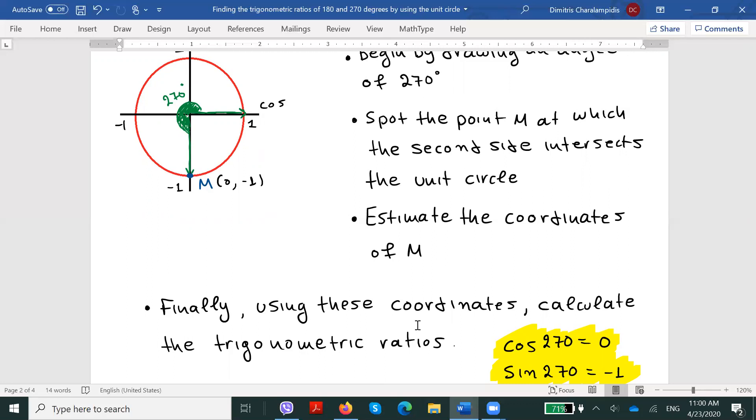And that is all about this video. So basically, we learned a way, by using the unit circle, of knowing the trigonometric ratios of two more angles: 180 and 270 degrees. If you face any difficulties about the content that was just mentioned, or for any kind of questions, you can always leave comments down below the video. As always, thank you for your time.